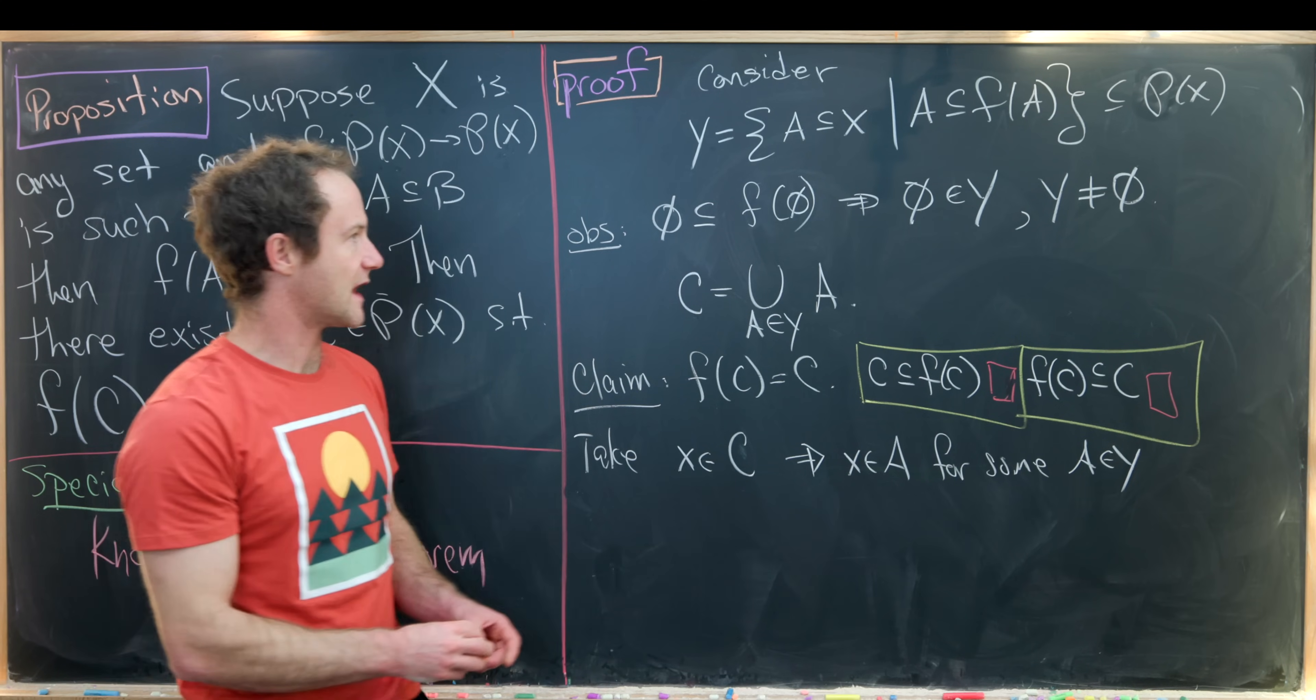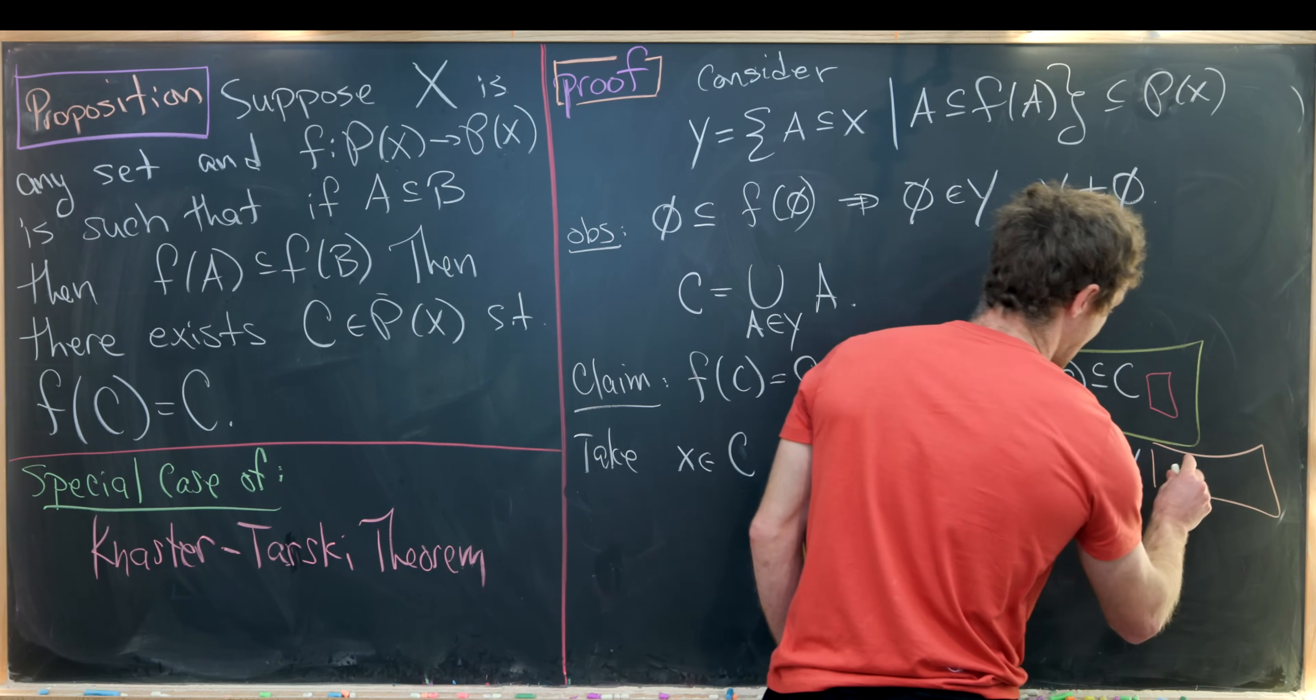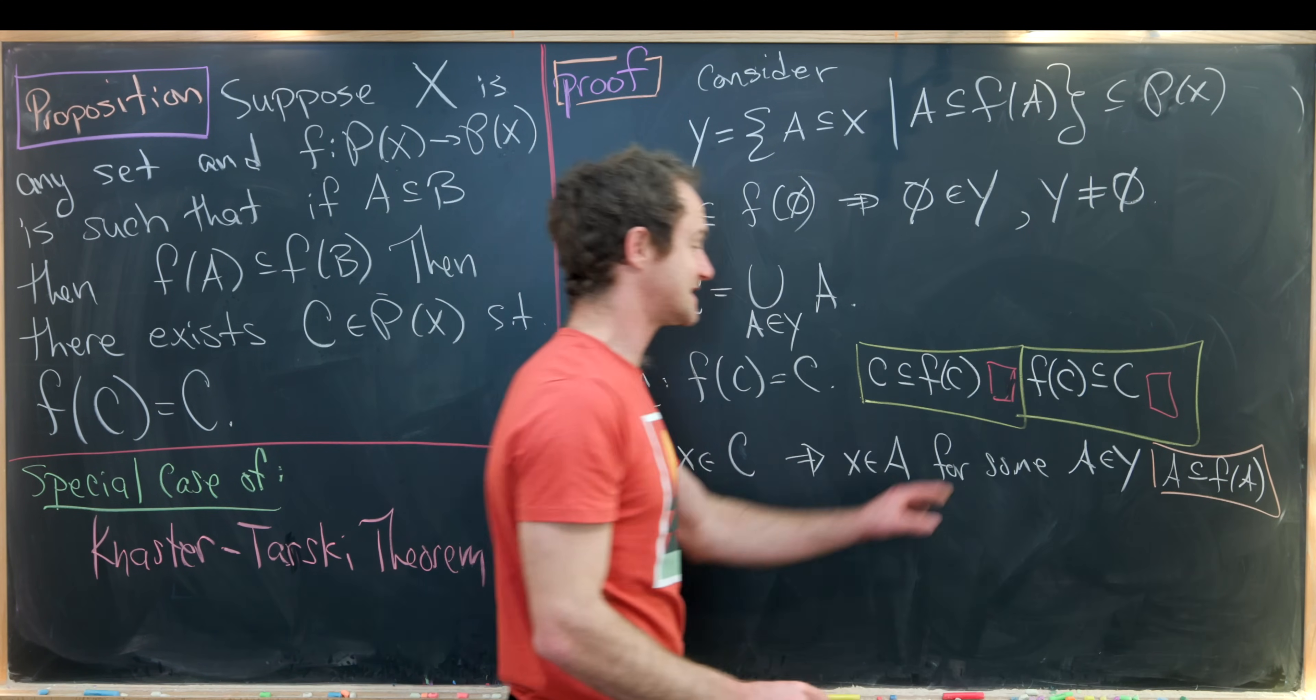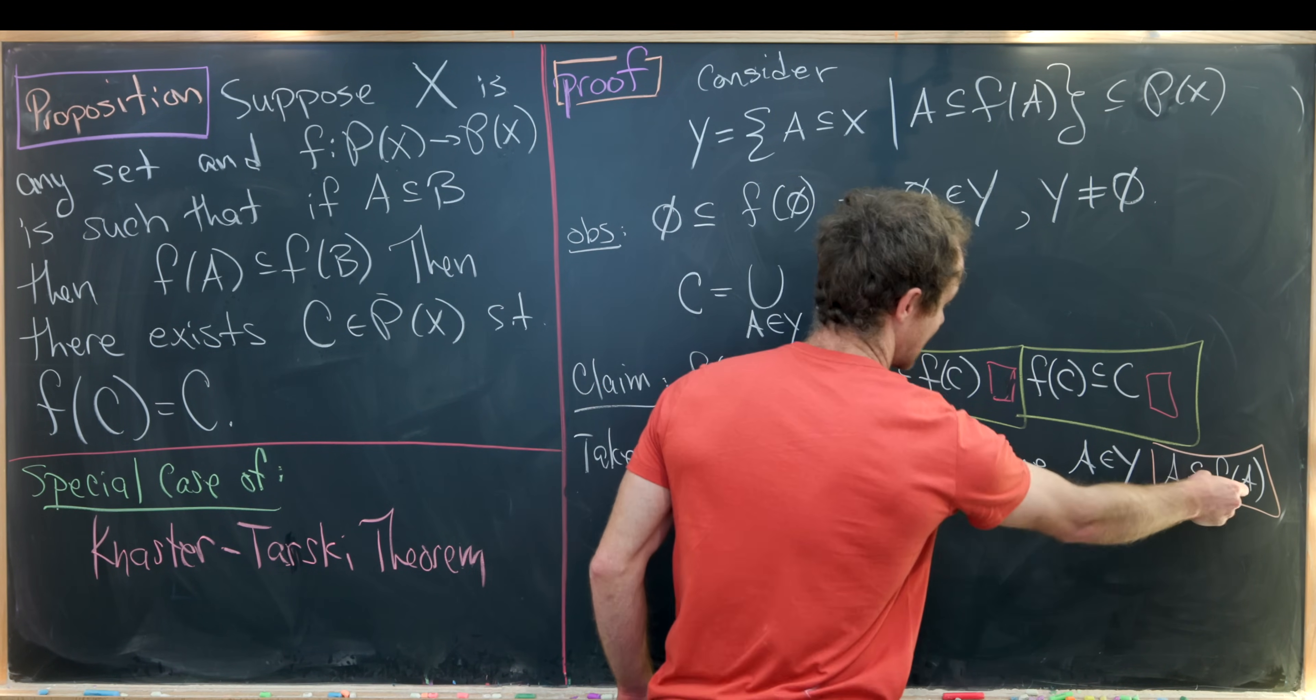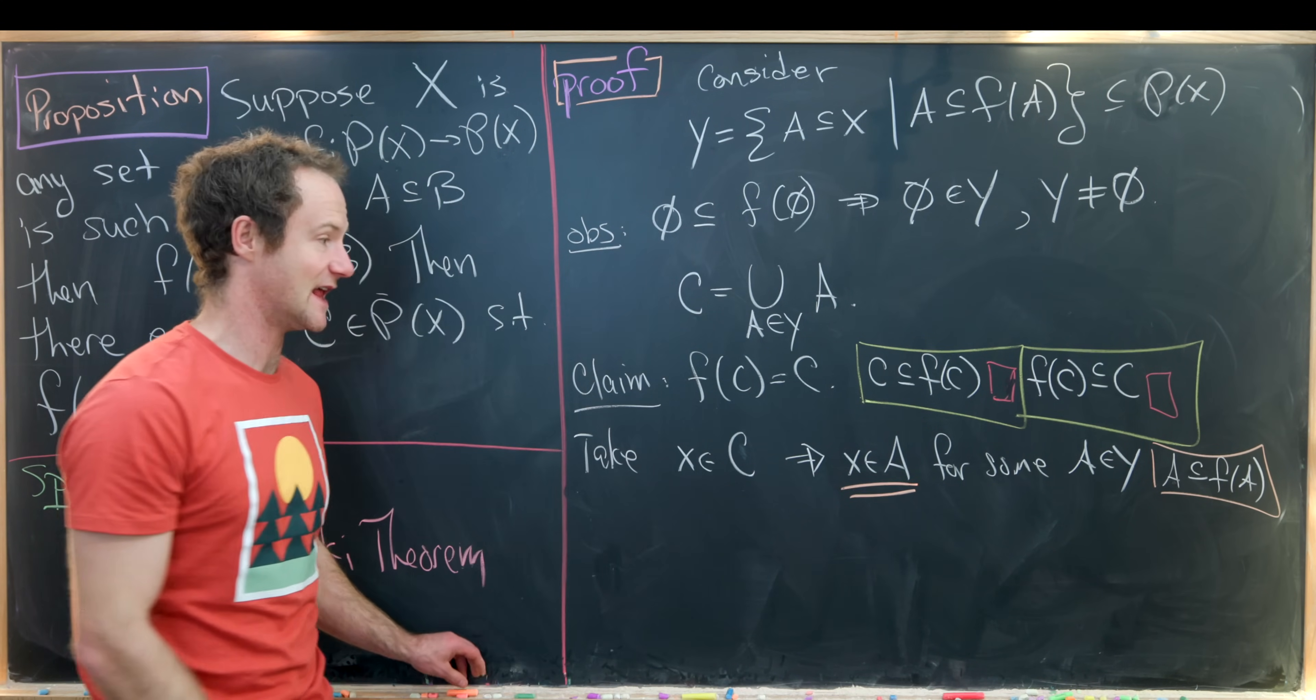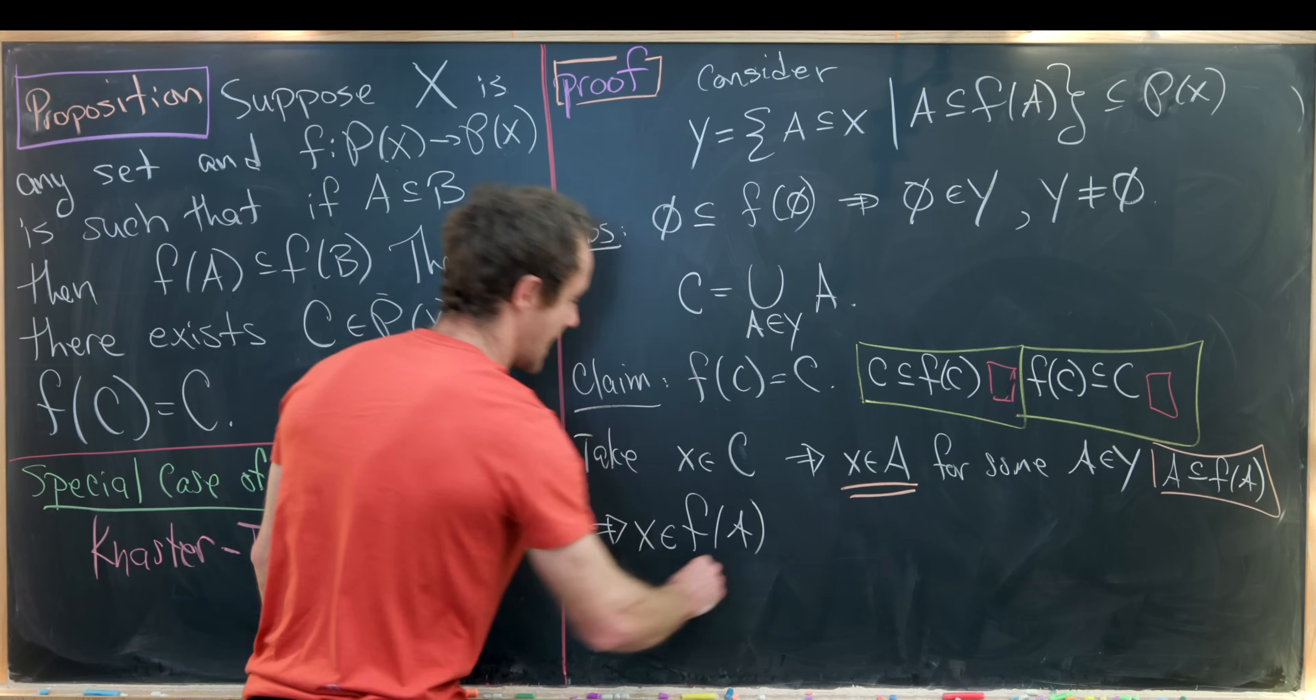But by the definition of c that means x is in a for some a in y. But let's recall that by the definition of y we know that a is a subset of f of a. So that's the entry fee into being in y. So we can combine this, the fact that a is a subset of f of a, with the fact that x is an element from a to tell us that x is an element from f of a.